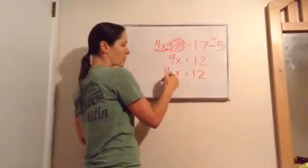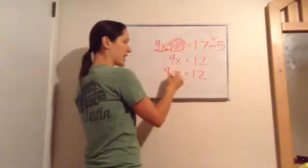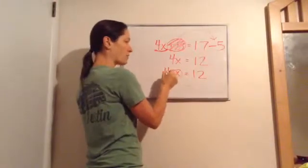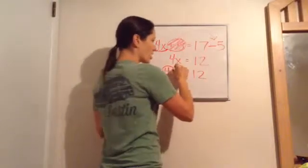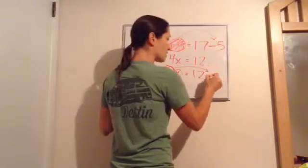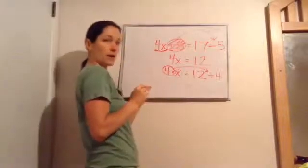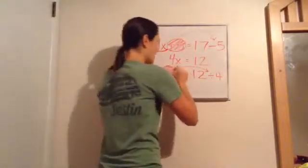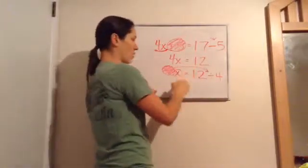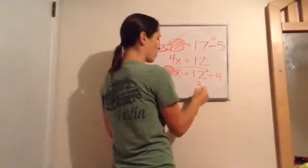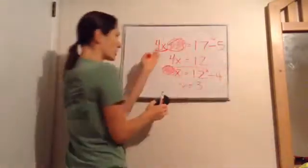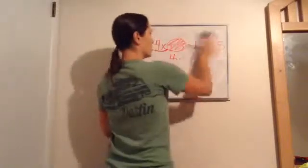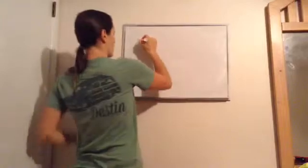So now since this says 4 times x, to get this x by itself, what do I do with this times 4? Divided by 4. So this times 4 comes across the equal and it becomes divided by 4, right? So I'm done with that. Now I've got the x by itself just like I wanted. So x equals 12 divided by 4, x equals 3. Got it? So it just added a little bit harder, not too much, but a little bit. Let's do a few more of these.